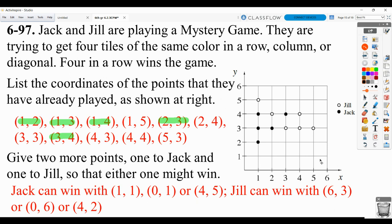Jill could win at 6, 3. So that would be here. So she could win with a horizontal win there. 0, 6 would be here because she could win diagonally. Or 4, 2. And, let's see, 4, 2 would be here. And that would allow her to win diagonally this way.